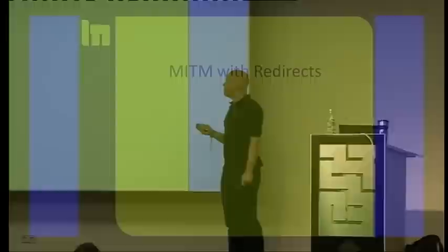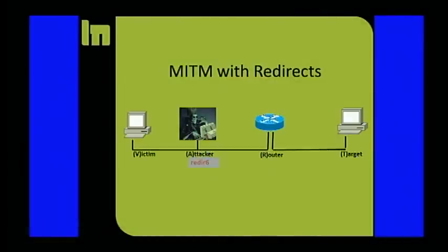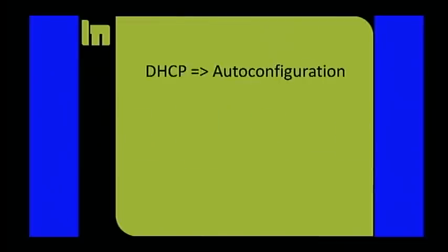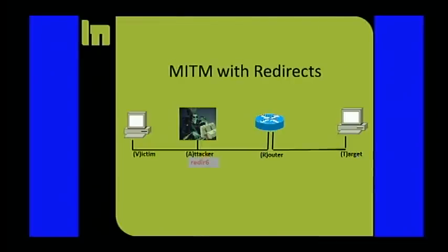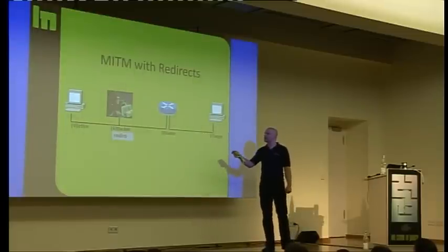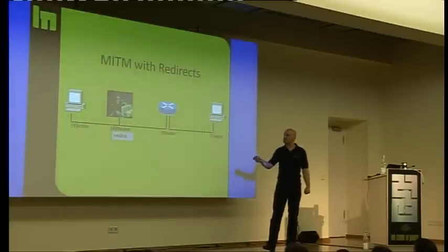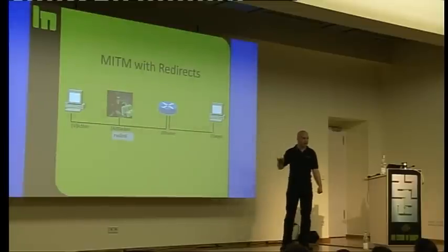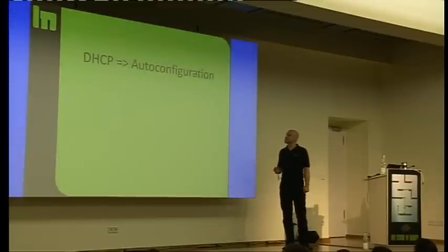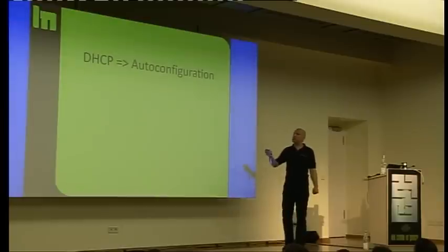Then we had duplicate address detection denial of service. The system sends a neighbor solicitation for the IP address it wants to use itself. If there's no answer, nobody else is using this IP address. I wrote a tool which would say for every solicitation, I'm using this IP address, and the systems would not be able to participate in the IPv6 network.